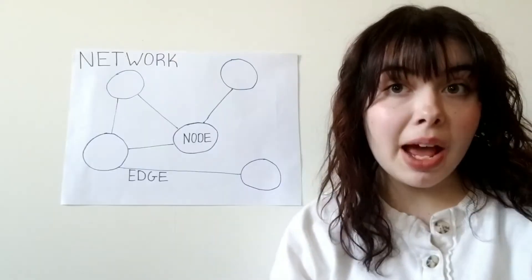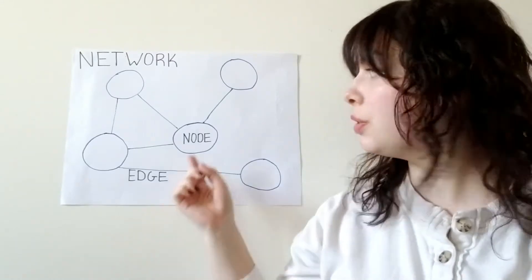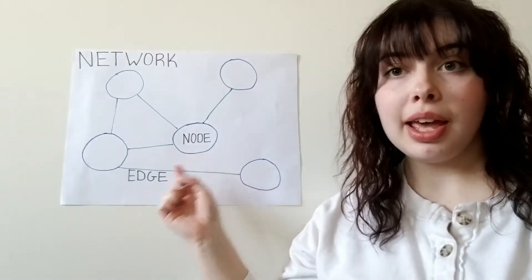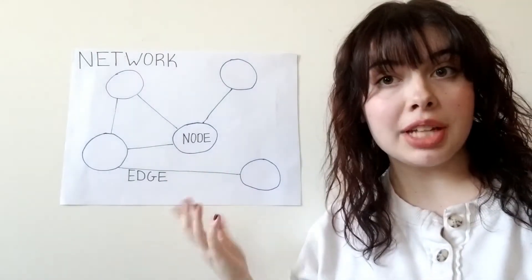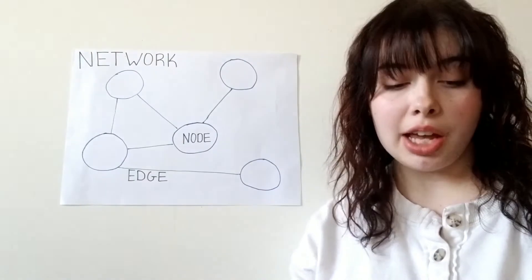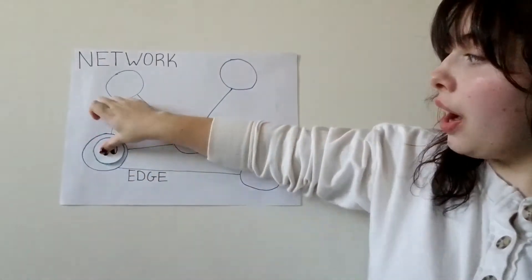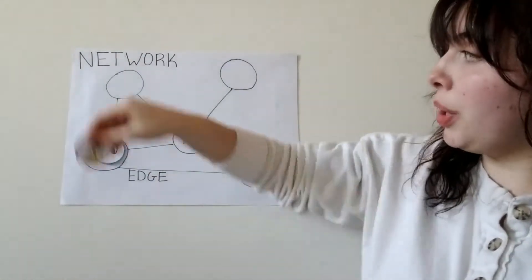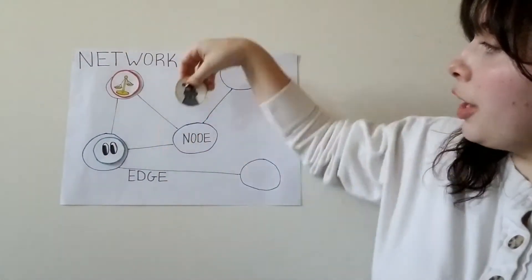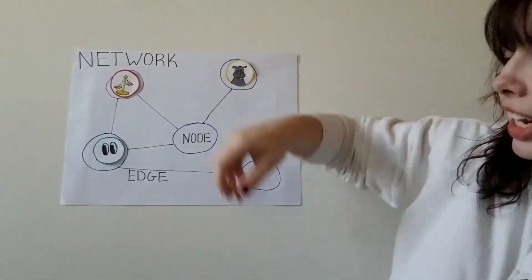All these different parts of our brain don't operate separately from each other. Neuroscientists can map the interactions between brain regions using mathematically derived networks. A network is a set of system elements known as nodes, and the lines that connect them, known as edges. In neuroscience, the nodes are the different parts of your brain, and the edges are the patterns of activity that connect them.